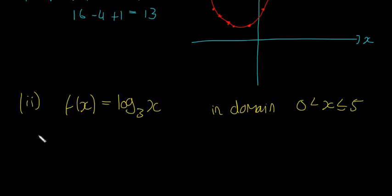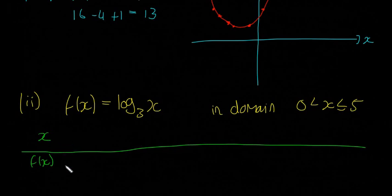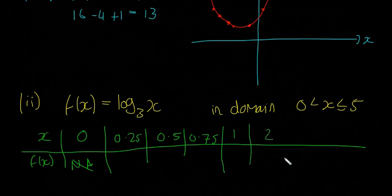We're going to do the same thing. X and then f(x). We're going to try 0, but because 0 is going to give us NA, we won't be able to find it. That means I'm going to try some numbers close to 0. Normally you wouldn't have to, but I'm just going to do this to show you what happens near 0. So I'll pick 0.25, 0.5 and 0.75, and then 1, 2, 3, 4 and 5.